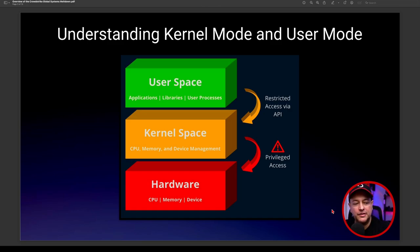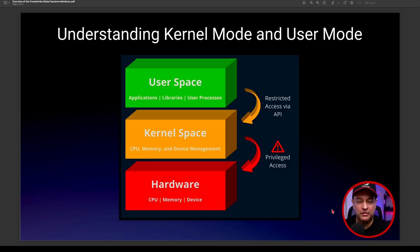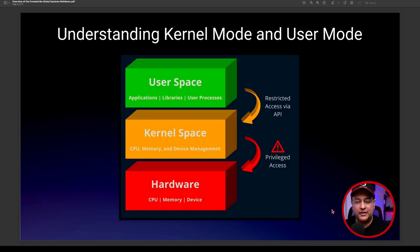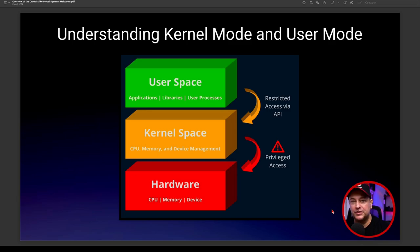To understand why CrowdStrike broke all these systems with blue screens of death, forcing physical rather than remote access to fix them, we need to understand how systems work. Programs run in what we call user space — applications, libraries, user processes — operating in a restricted access area, accessible via application program interfaces, the APIs, which talk down to the operating system or kernel level.